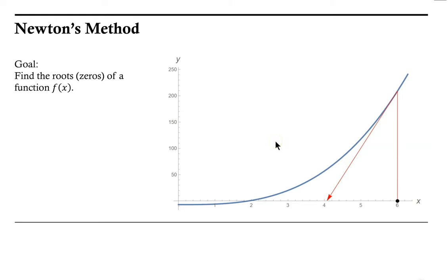Over here on the right we have a graph of a function f of x. Our goal is to approximate the roots or zeros of that function. Graphically, that means we're trying to approximate the x value at which the function crosses the x-axis, or where f of x equals zero. We're going to use tangent lines to the curve to help us approximate or find that root or zero.